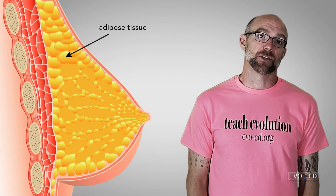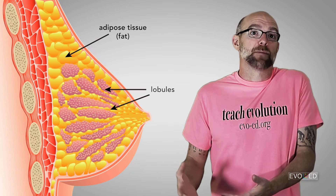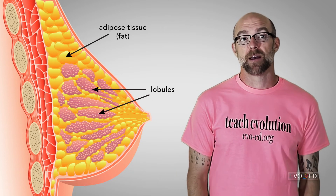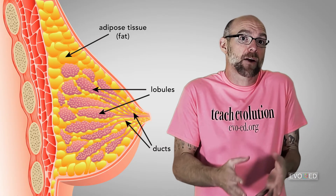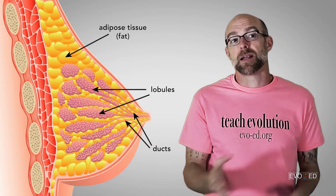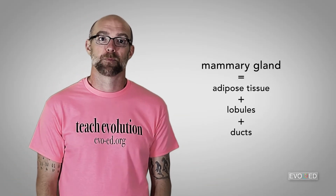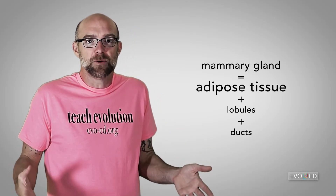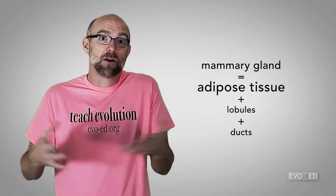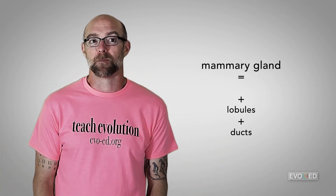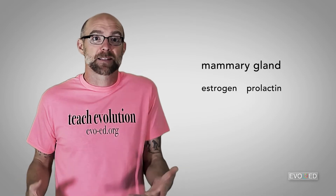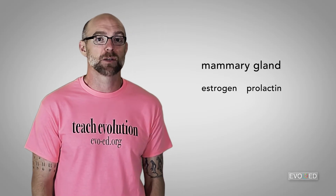Let's take a look at the anatomy of the breast. Breasts are made of three types of tissue: adipose tissue, also known as fat; the lobules that are capable of producing milk; and the ducts that are capable of carrying milk from the lobules to the nipple. All humans, regardless of gender, have mammary glands, with the exception of those who have had a mastectomy. Some humans have mammary glands with lots of fatty tissue, while others have mammary glands with little or no fatty tissue. Hormones like estrogen and prolactin play key roles in the capacity of mammary glands to produce milk.